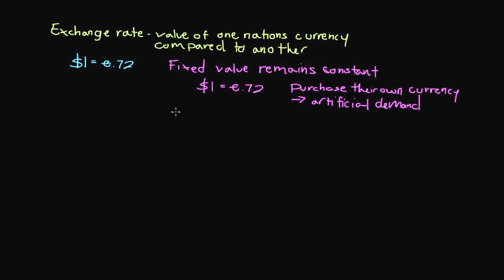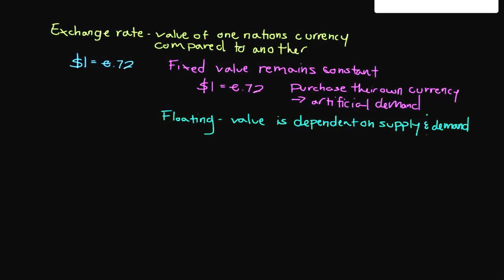We use more commonly what we call a floating exchange rate. And what a floating exchange rate means is that the value of currencies is dependent on supply and demand. Meaning that if the demand for a particular currency is increasing, then the likelihood of that nation's currency strengthening is much more likely, is much more probable.